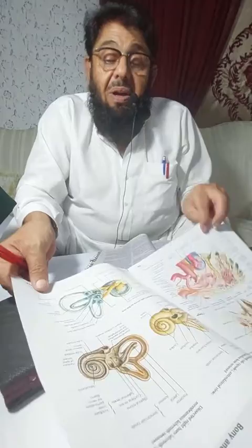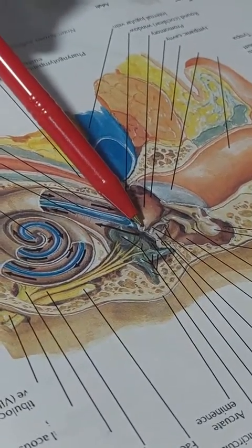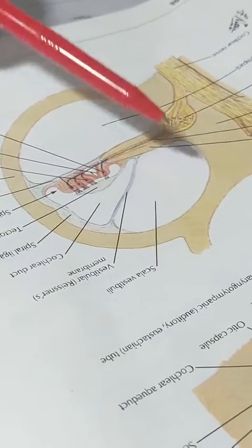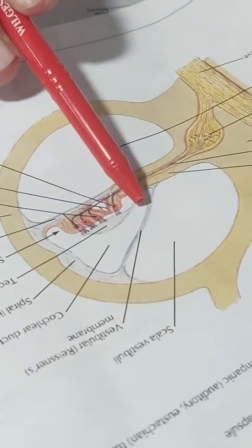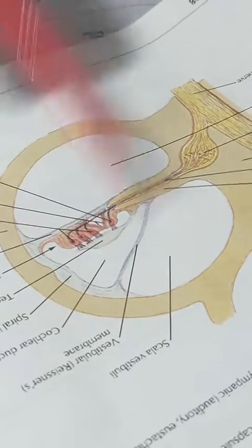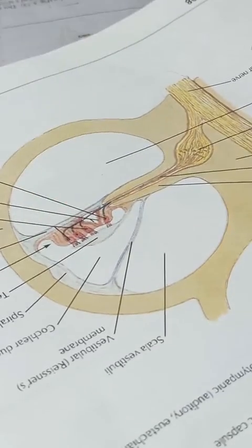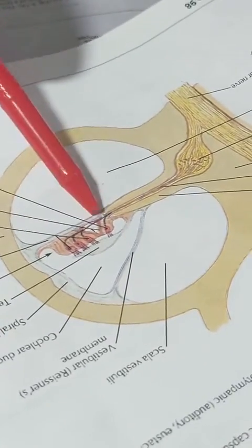The sound waves from the tympanic membrane travel through the ossicles of the middle ear, through the oval window, and ultimately reach the perilymph. The perilymph starts to vibrate and this vibration is transmitted through the vestibular membrane, also called Reissner's membrane, to the endolymph present in the cochlear duct.